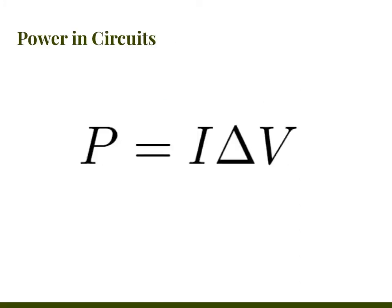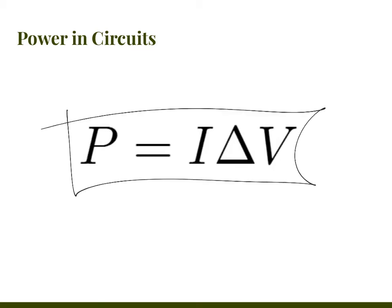As a side note before we evaluate a more complicated circuit: the equation you use for power in circuits is power equals I times delta-V. You can substitute Ohm's law (V equals IR) — solving for I or plugging in for V. This is how you calculate power in circuits. Power is measured in watts.